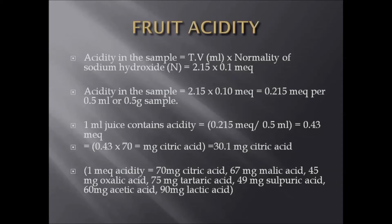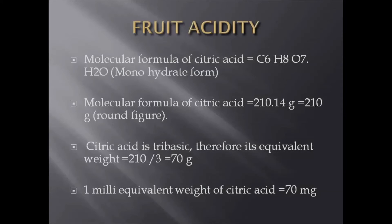Here we want to estimate in terms of citric acid, so we multiplied the milliequivalents with 70. Finally, for each ml, 30.1 mg of citric acid was observed. We calculated in terms of citric acid for each ml.